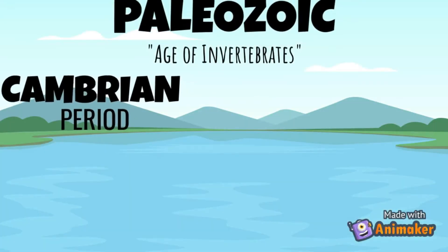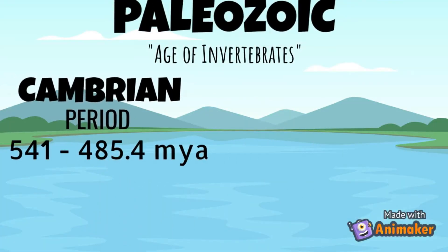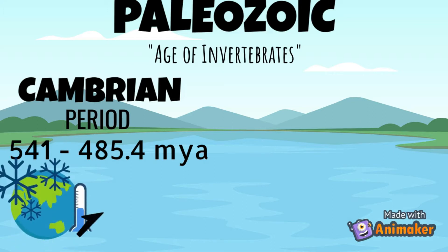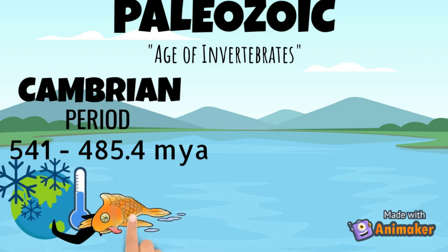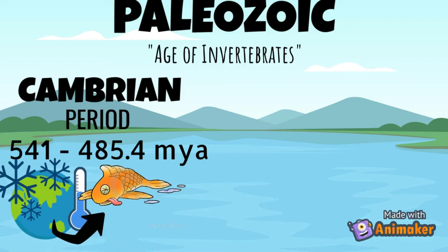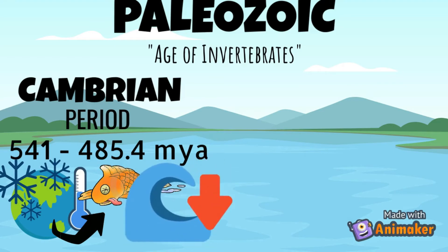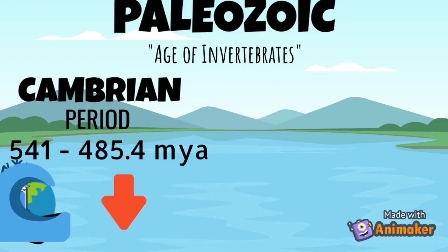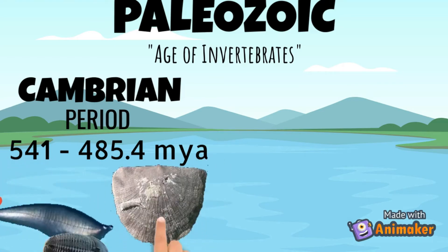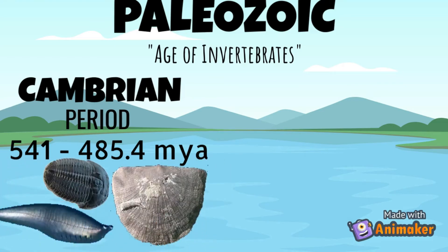Starting off with the Cambrian period, which was 541 up to 485.4 million years ago. The Earth's cooler conditions eliminated many warm water species and glaciation lowered global sea level, but there was no significant ice formation. Chordates, brachiopods, and arthropods were seen in this period.